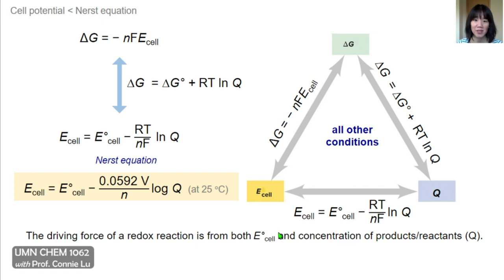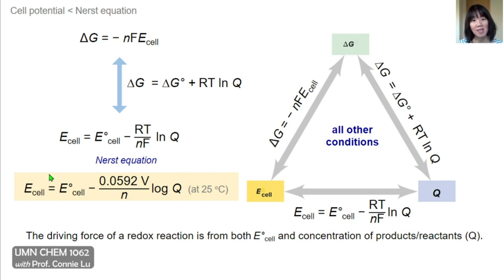A more usable form of the Nernst equation, restricted to 25°C and with constants R and F substituted and natural log converted to log, becomes much easier to use. The Nernst equation shows that the cell potential — the driving force for a redox reaction — is the sum of two terms: the standard cell potential, which depends on the two metal electrodes at standard state, and a second term that depends on Q, the ratio of product to reactant concentrations.